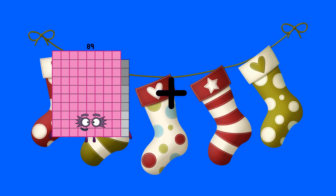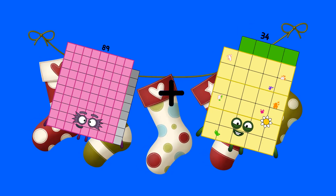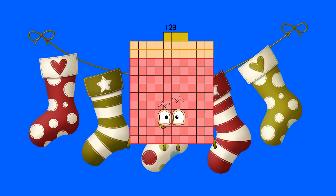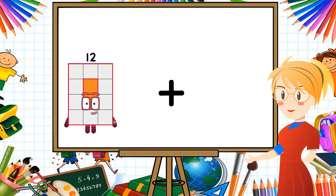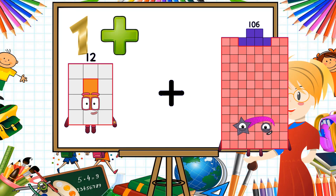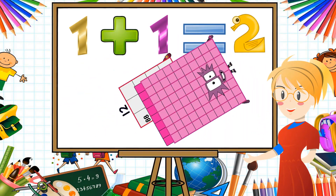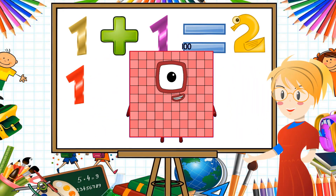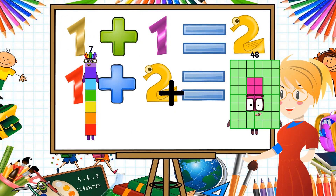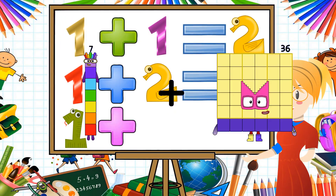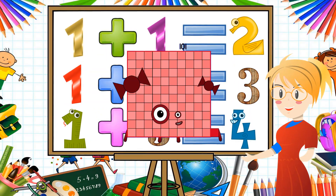Eighty-nine plus thirty-four equals one hundred twenty-three. Twenty-nine plus thirty-eight equals sixty-seven. Ninety-four equals one hundred one.